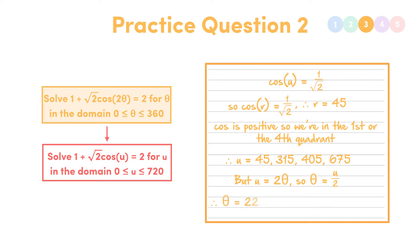So those are 22.5, 157.5, 202.5 and 337.5. And now we're done. Awesome job.